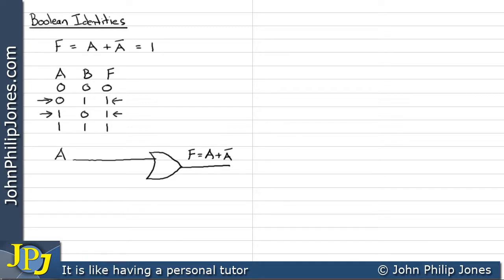Well I can see I've got the input A here. Now what I need to do is to produce the other input to be NOT A, and that's quite simple to do. All you do is you take a tap off the A here and you put that A through a NOT gate.